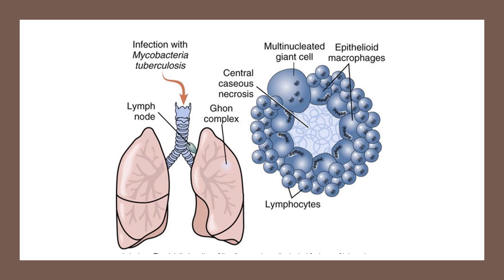This picture from the textbook shows the Ghon complex. The parenchymal focus is in the respiratory zone, most likely in the apices. Around the hilar area where there's more lymph tissue, you'll catch this in the A and H assessments of a chest x-ray. The granuloma shows central necrosis surrounded by lymphocytes, with the bacilli cased in to keep it from spreading.